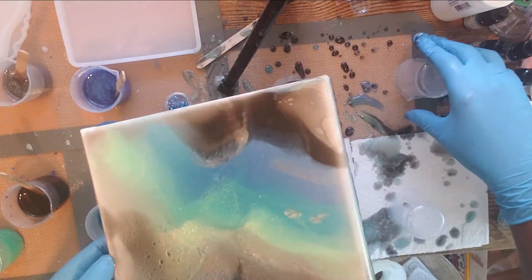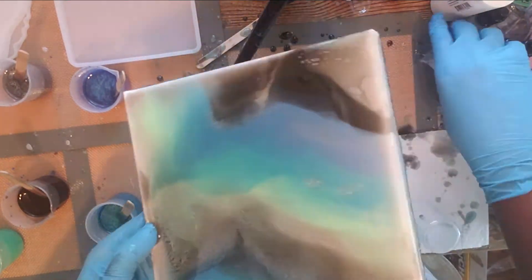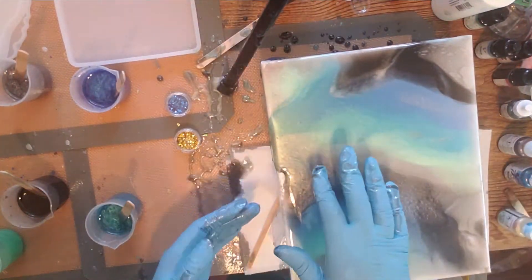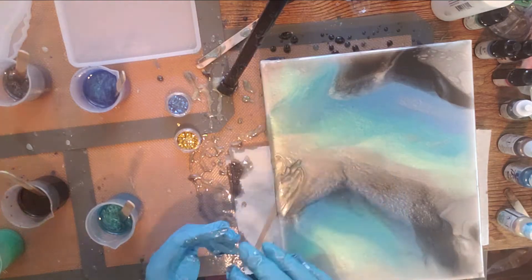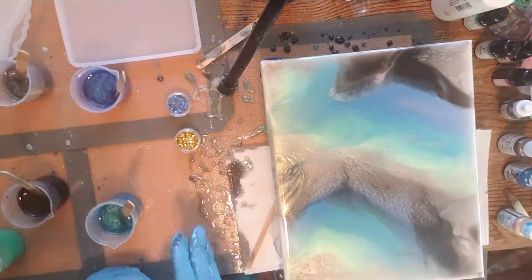Here all I'm doing is knocking my cups over and also just trying to fill in all the spots that I see that don't have resin, like the sides and the corners, just trying to make sure that they're covered as much as possible.